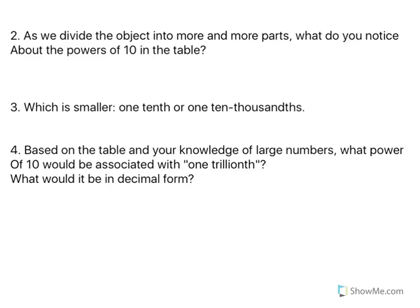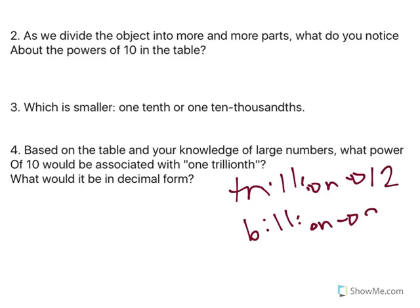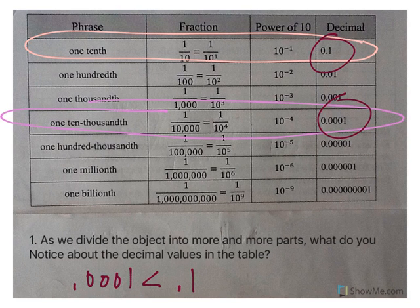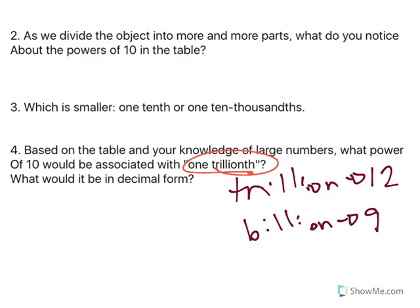In number 4, it says, based on your table and your knowledge of large numbers, what power of 10 would be associated with 1 trillionth? Well, if you remember that the word trillion means 12. And just to refresh, billion is 9. When I look at this table, and I look at 1 billionth, billion is 9, billionth is negative 9. So trillionth would be times 10 to the negative 12, because trillions is the 12. And in decimal form, well, we would have 11 zeros,